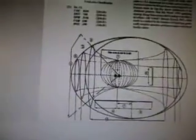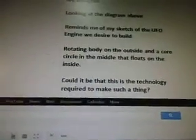That's why I brought it up. Where the electrical currents employed in the bombardment are passed simultaneously across the photosphere of said reference singularity in its direction of rotation and contrary to its direction of rotation, to release the directive flow of gravitons in the sinusoidal... I don't know what he's talking about. But anyways, that's what he's talking about. So here are some pictures. That's what it looks like. Looking at the diagram above, reminds me of my sketch of the UFO engine we desire to build — rotating body on the outside and a core circle in the middle that floats on the inside. Could it be that this is the technology required to make such a thing?